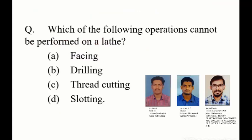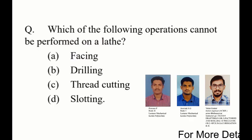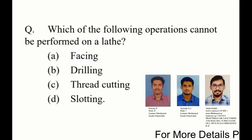Question 2: Which of the following operations cannot be performed on a lathe? There are four options. Option A - Facing. Option B - Thread Cutting. Option D - Floating. These four options will be identified by lathe.